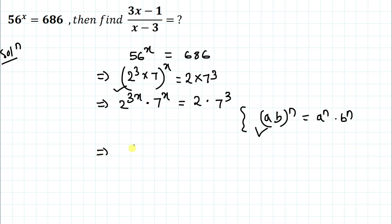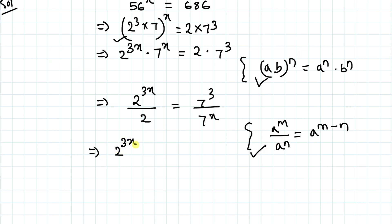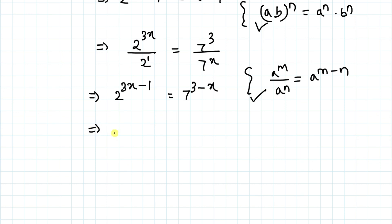Taking the same bases to one side by cross multiplication, we write 2^(3x) divided by 2 equals 7³ divided by 7^x. Applying the exponential rule a^m ÷ a^n = a^(m−n), since the bases are the same, we get 2^(3x−1) equals 7^(3−x).